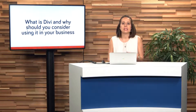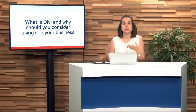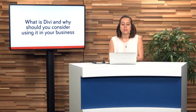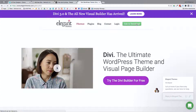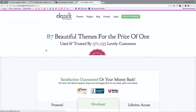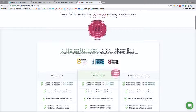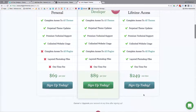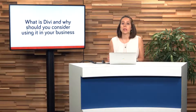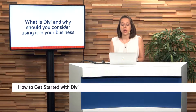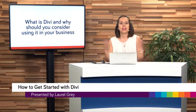The pricing for Divi is included within all of the other themes that Elegant Themes offers, as well as some additional plugins. It says 'join to download.' If you want to buy all 87 themes, it's $69 per year. They also have a lifetime access package for $250, giving you access to all themes, all updates, and everything — which you might want to do as a business owner. If you've already got a web developer working with you and they're recommending Divi, chances are they already have a lifetime access membership and can allow you to use that.